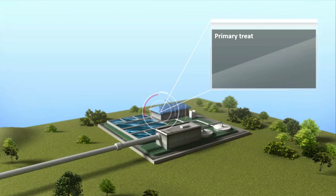Primary treatment slows down the wastewater in a clarifier settling tank to isolate solids that sink or float due to buoyancy. Clarifiers are huge tanks which provide enough retention time for the separation of bigger particles in wastewater. The scum and settled sludge are removed by scraper mechanisms.